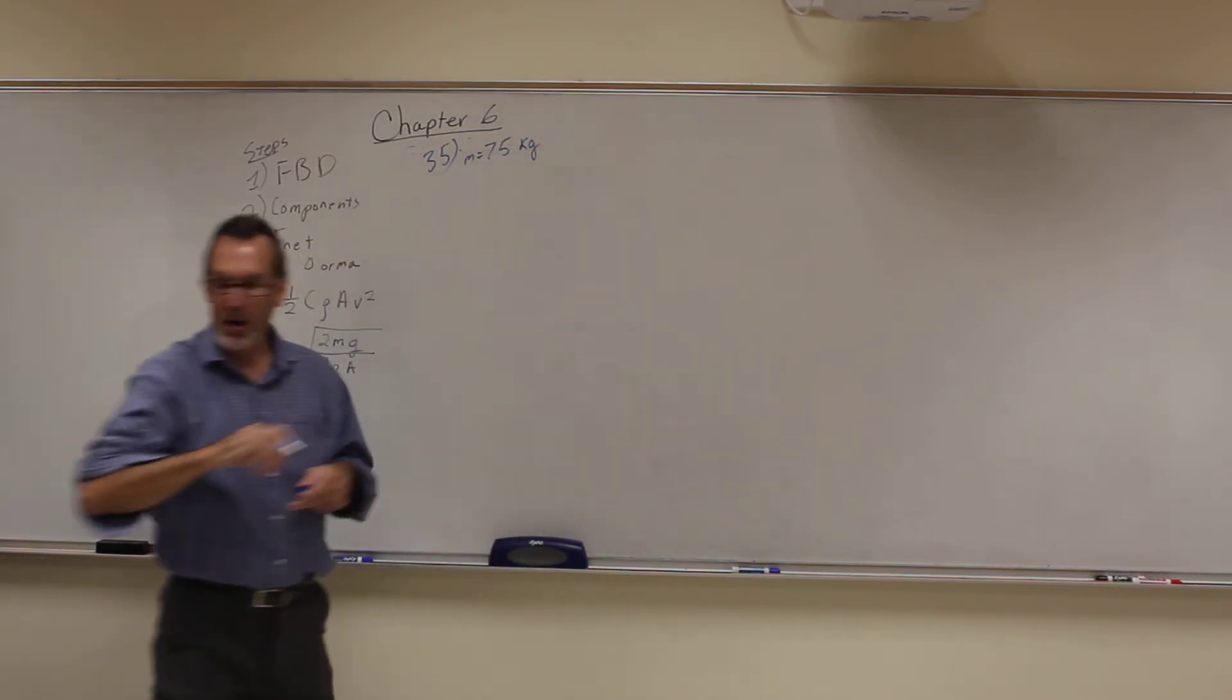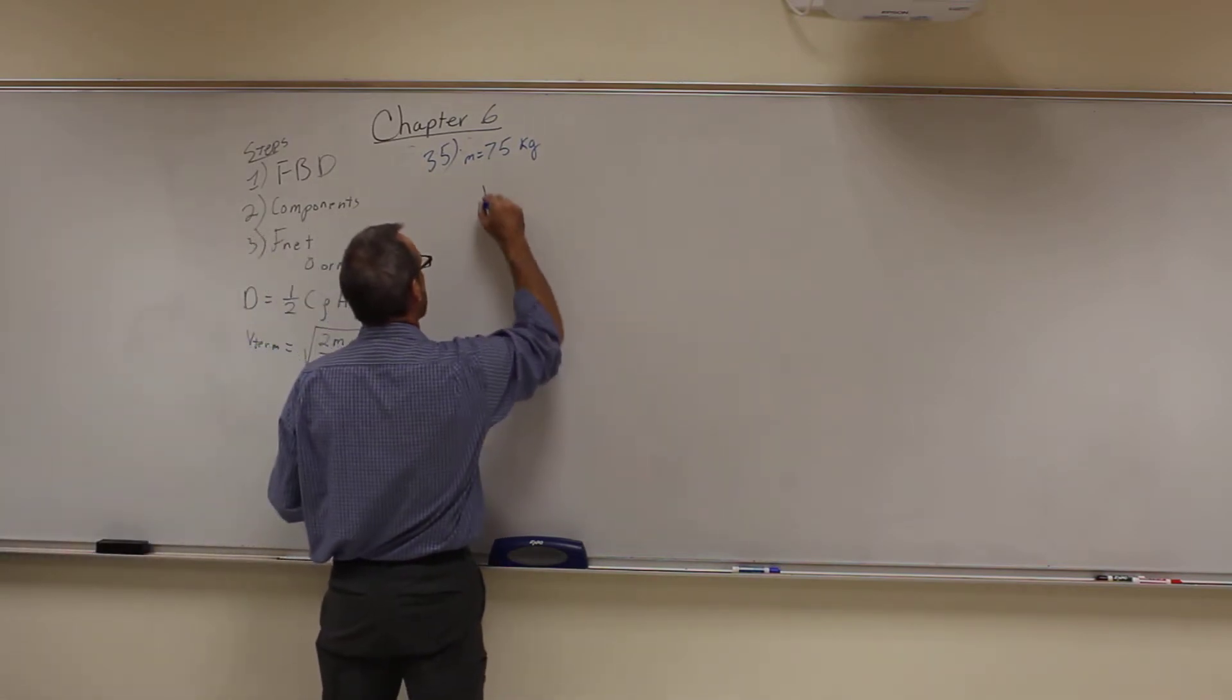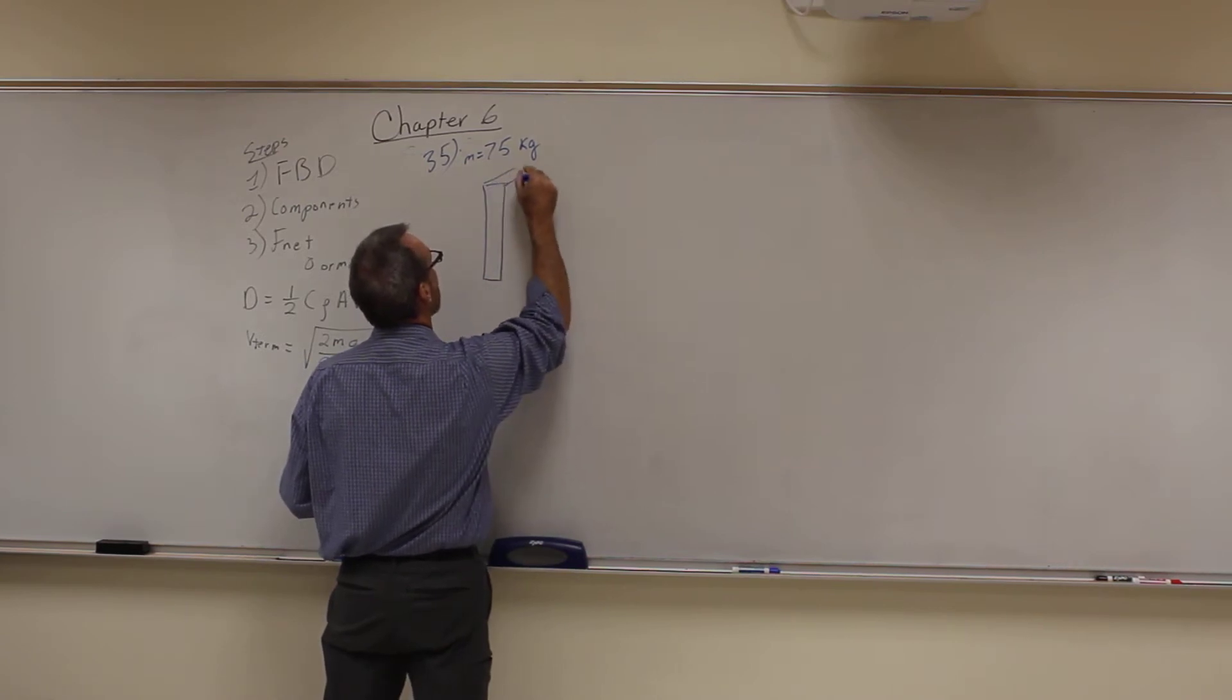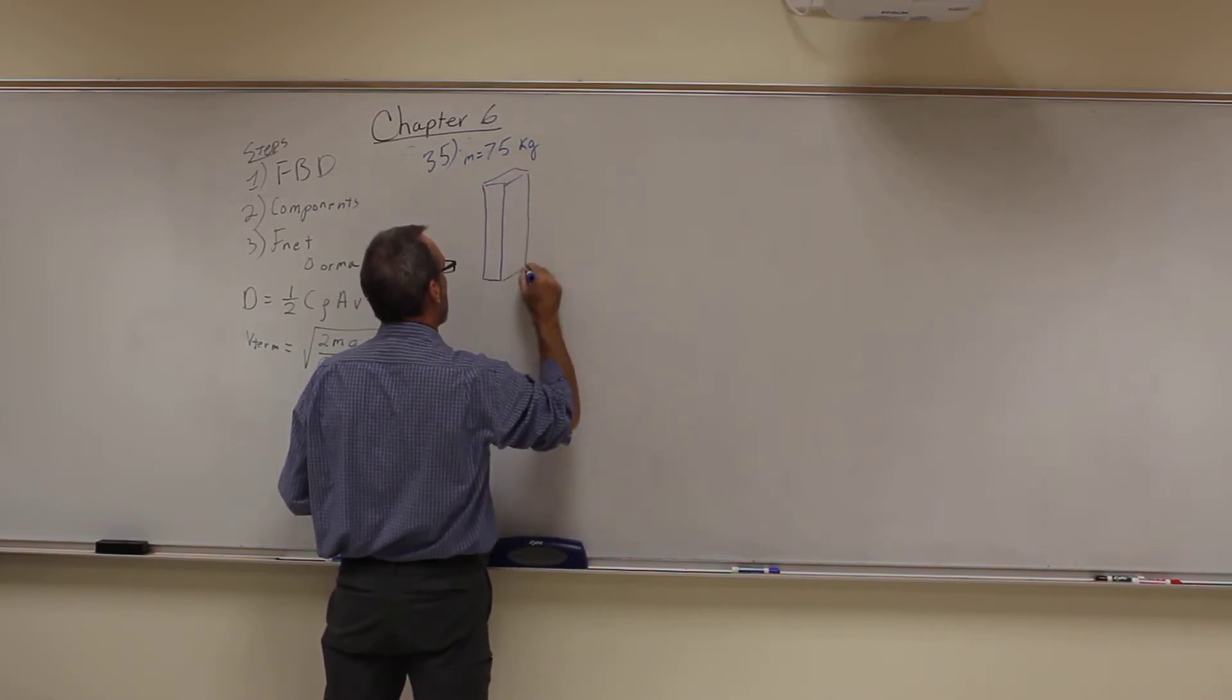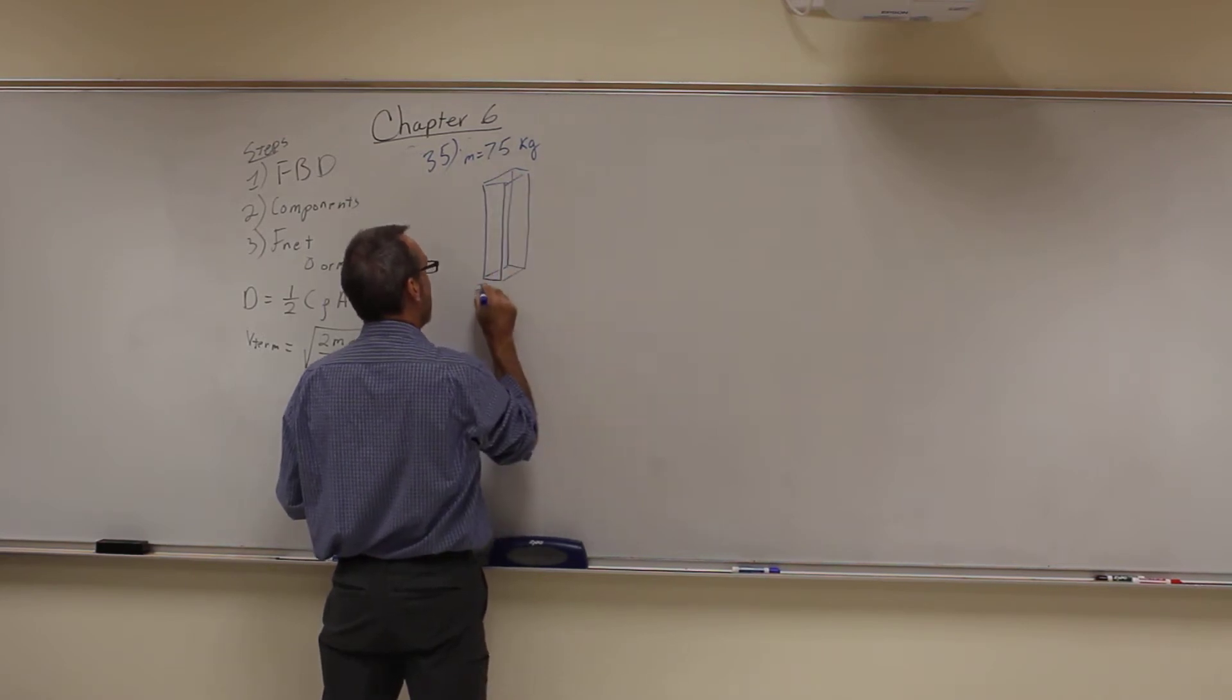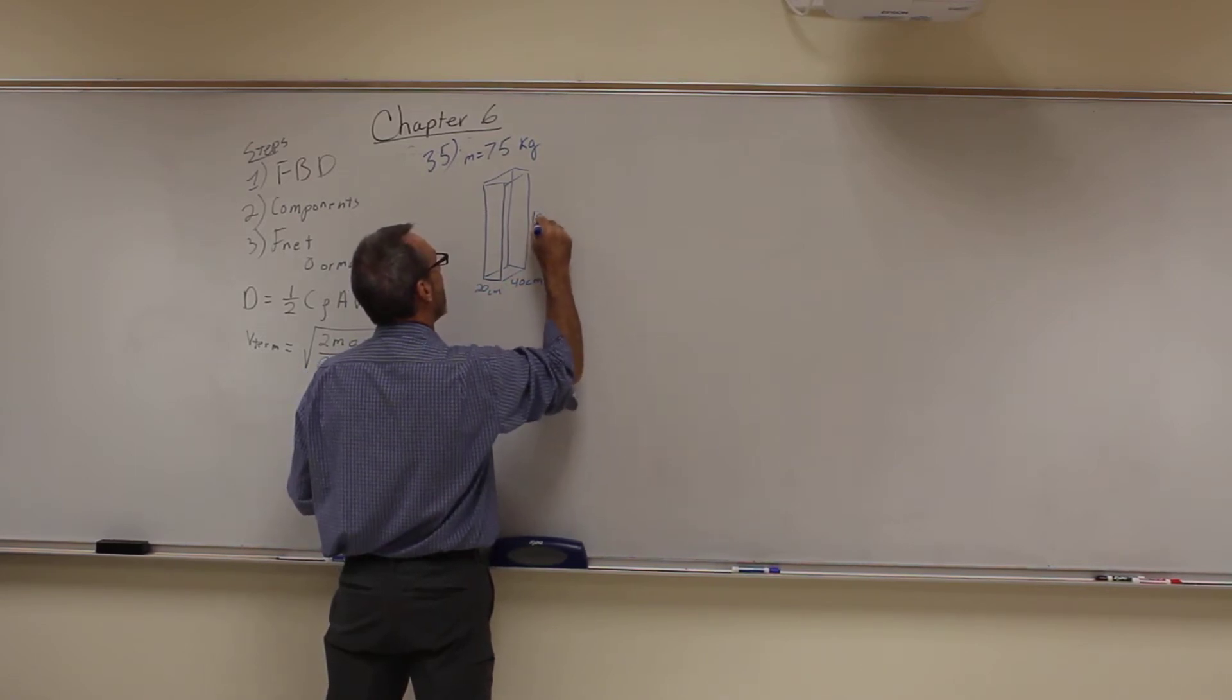The skydiver can be modeled as a rectangular box of dimensions 20 × 40 × 180. You can think of them as being a box or rectangular box. This is an approximation here.